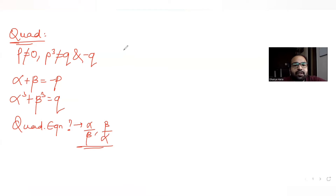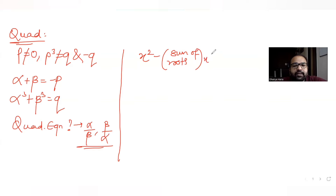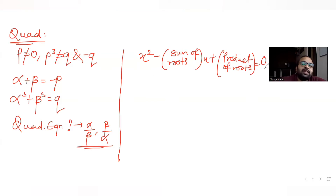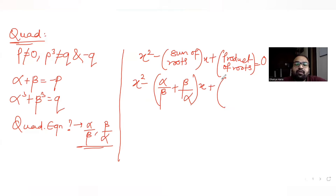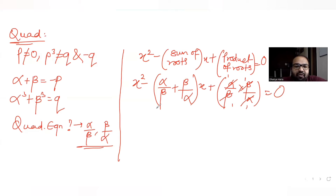A quadratic equation is given by x² minus (sum of roots)·x plus (product of roots) = 0. Applying that here, it becomes x² minus (alpha/beta + beta/alpha)·x plus (alpha/beta × beta/alpha). The product of roots: alpha/beta times beta/alpha — this and this cancel — leaving one.